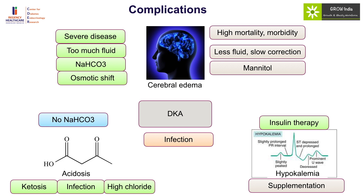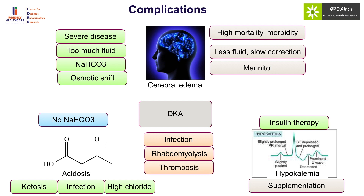Other complications of DKA include opportunistic infections like rhinocerebral mucormycosis, rhabdomyolysis which typically presents in the setting of severe hypophosphatemia with muscle pain, colored urine and renal failure, and thrombosis — either venous such as cortical venous thrombosis or peripheral thrombosis — because of significant hyperosmolality.